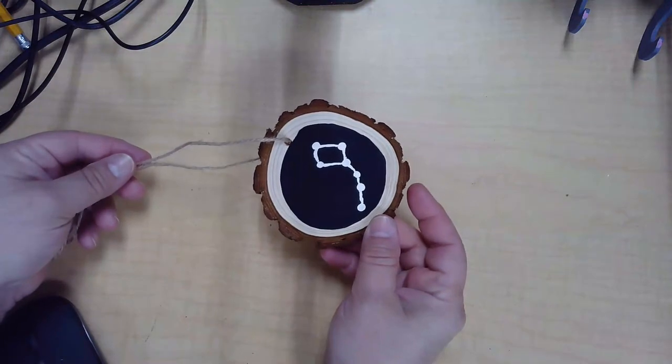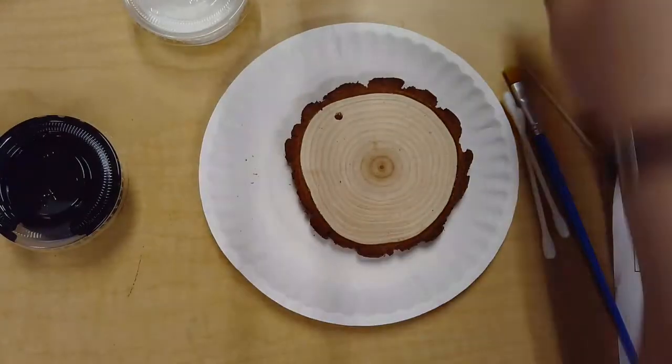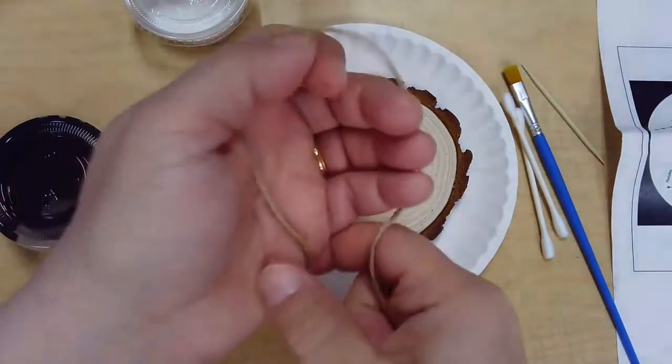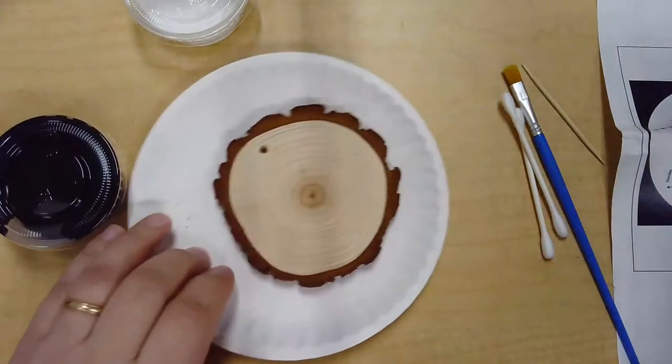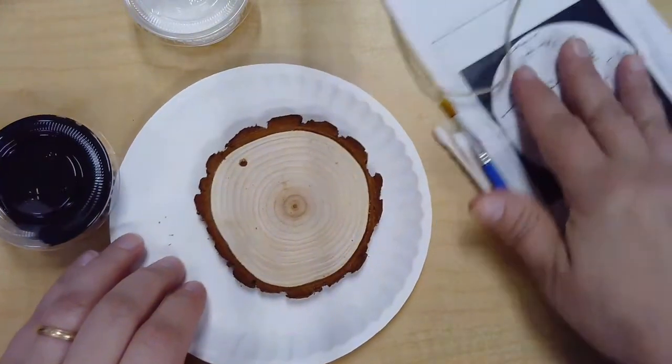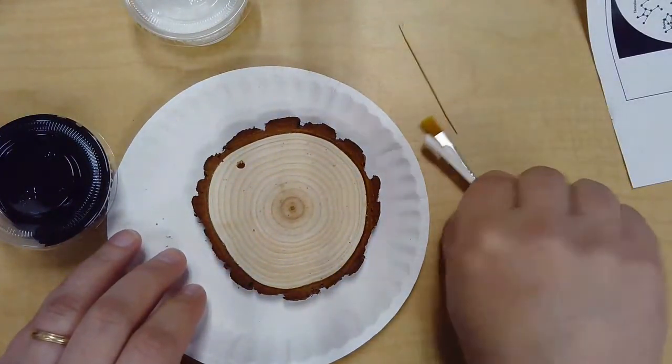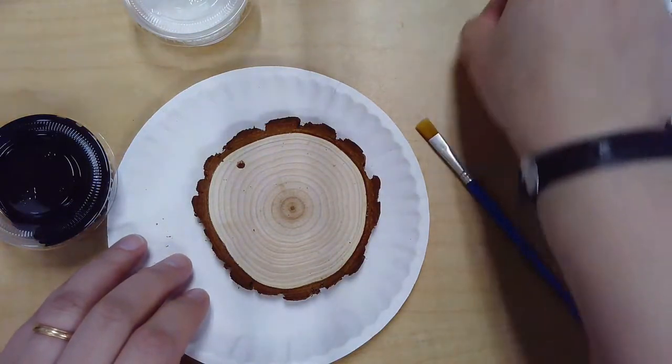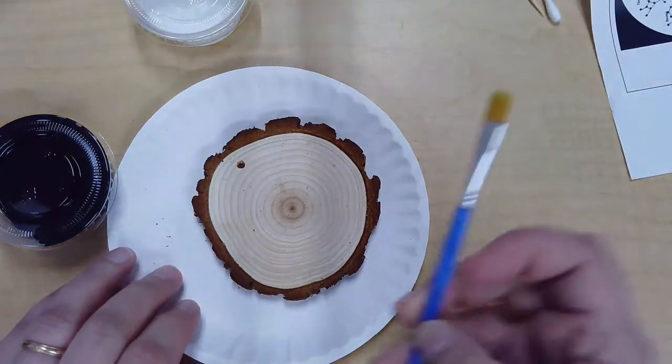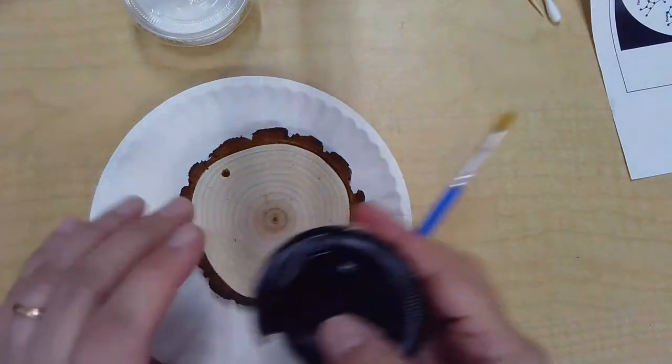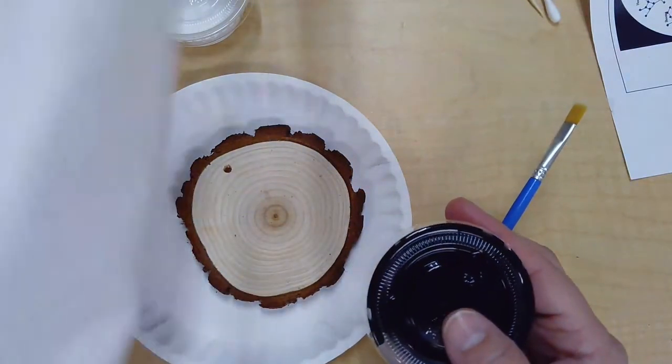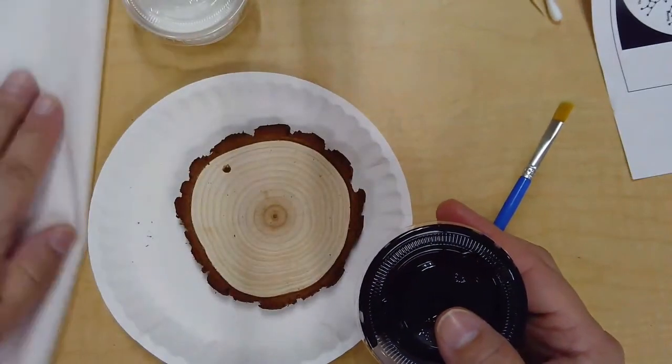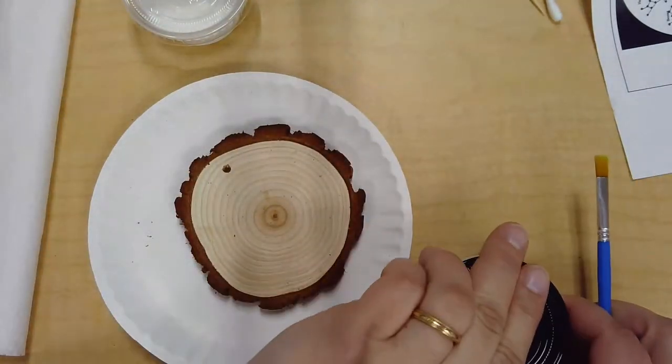You're going to choose the constellation that's either on the chart that I gave you or pick your own. To start off with you're going to set aside your string and your chart and your q-tips and toothpick and we're just going to paint the black surface first. Make sure you have paper towel or whatever protective stuff handy.